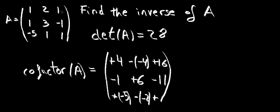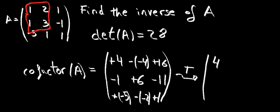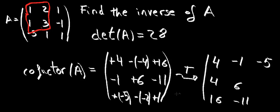Now for the last value, third row, third column, the minor is this square here. 1 times 3, minus 2 times 1, is going to give us a positive 1. Now we're going to rearrange this and calculate the transpose of it. The first row is going to become the first column: 4, 4, plus 4, 16. Then the second row becomes the second column: we get minus 1, 6, minus 11. And the third row becomes the third column: so we have minus 5, plus 2, and 1. This is the adjoint of matrix A.